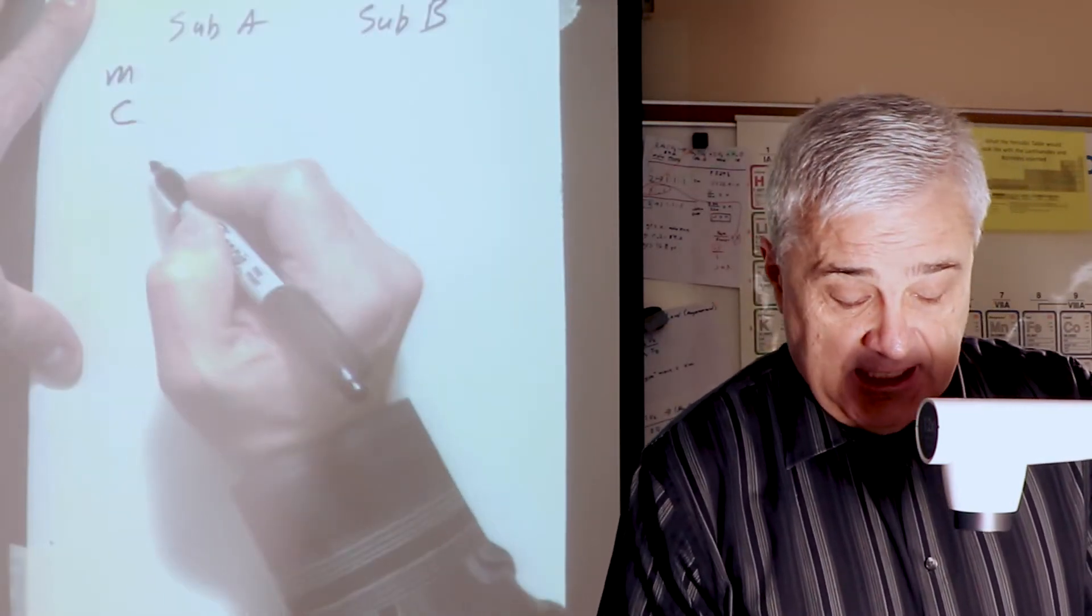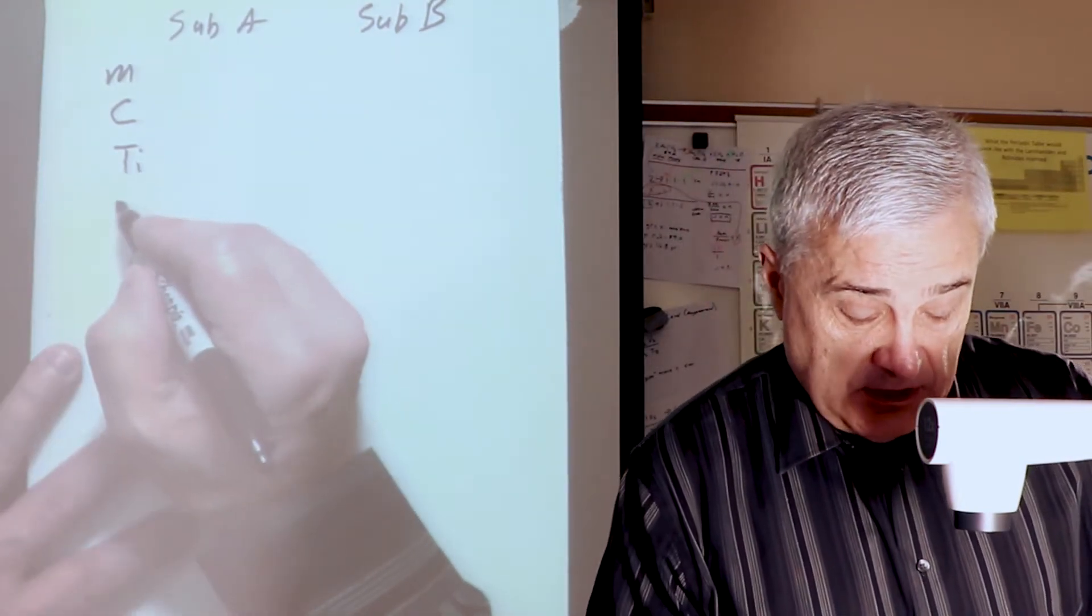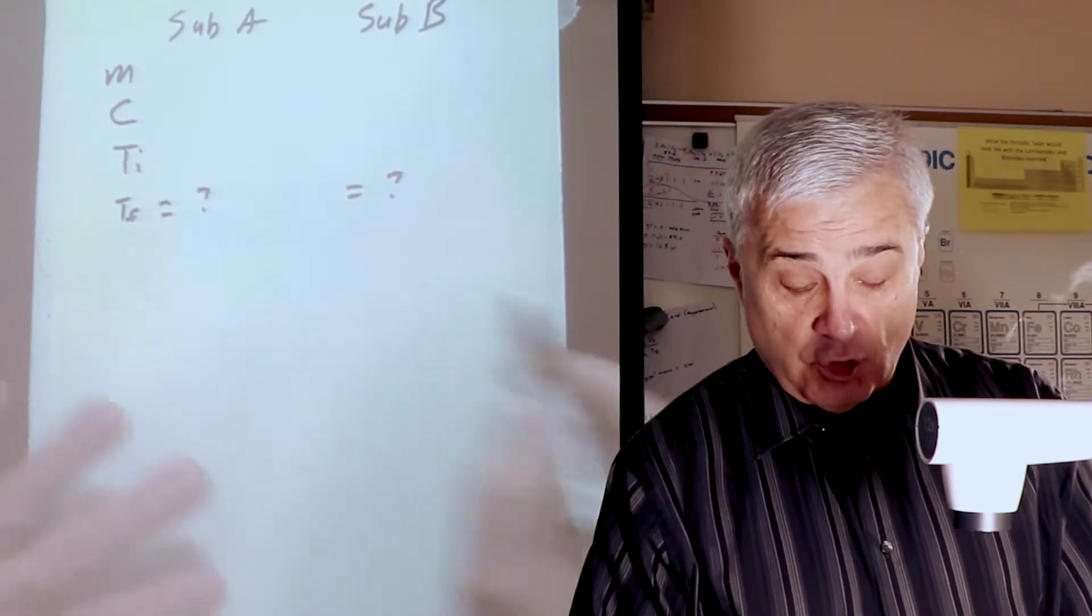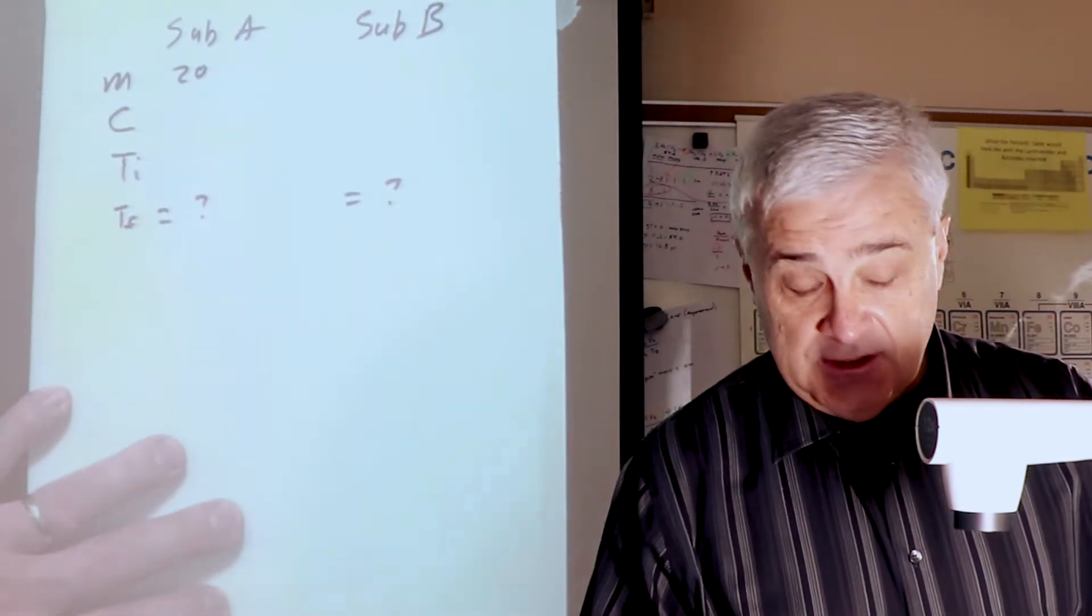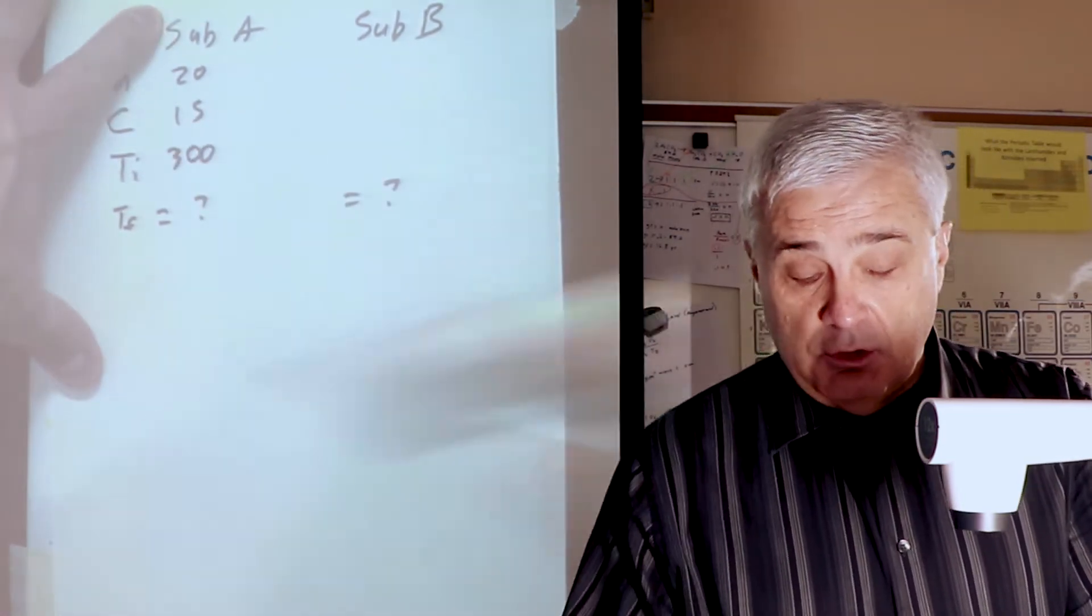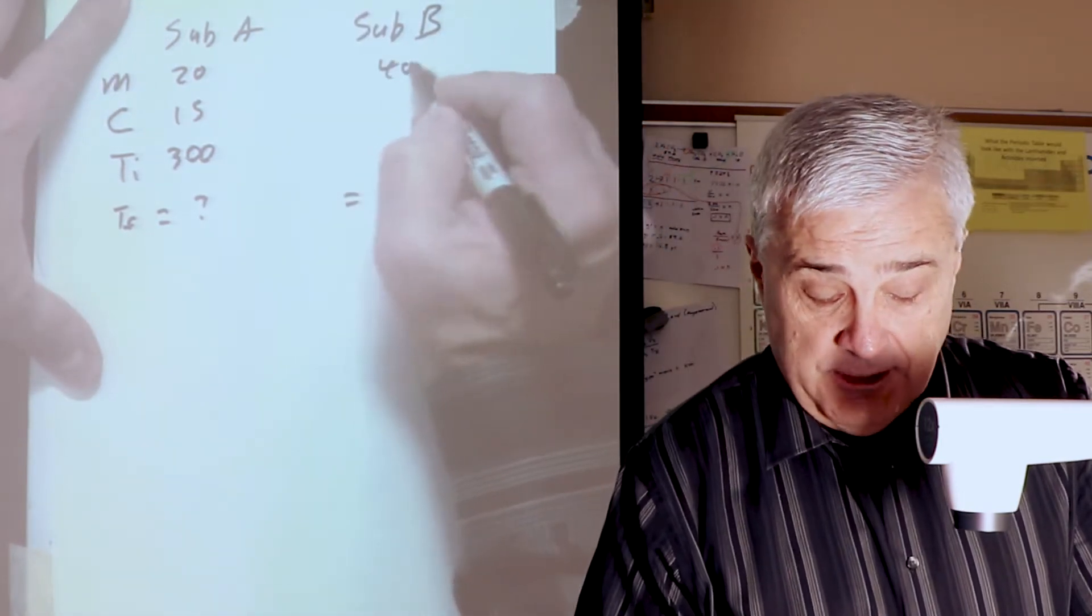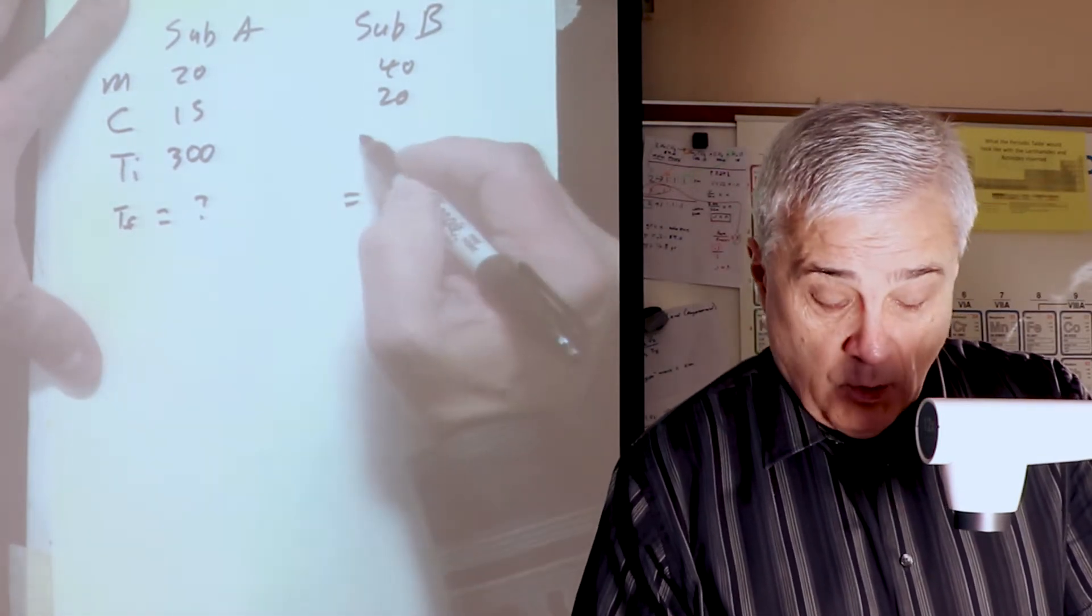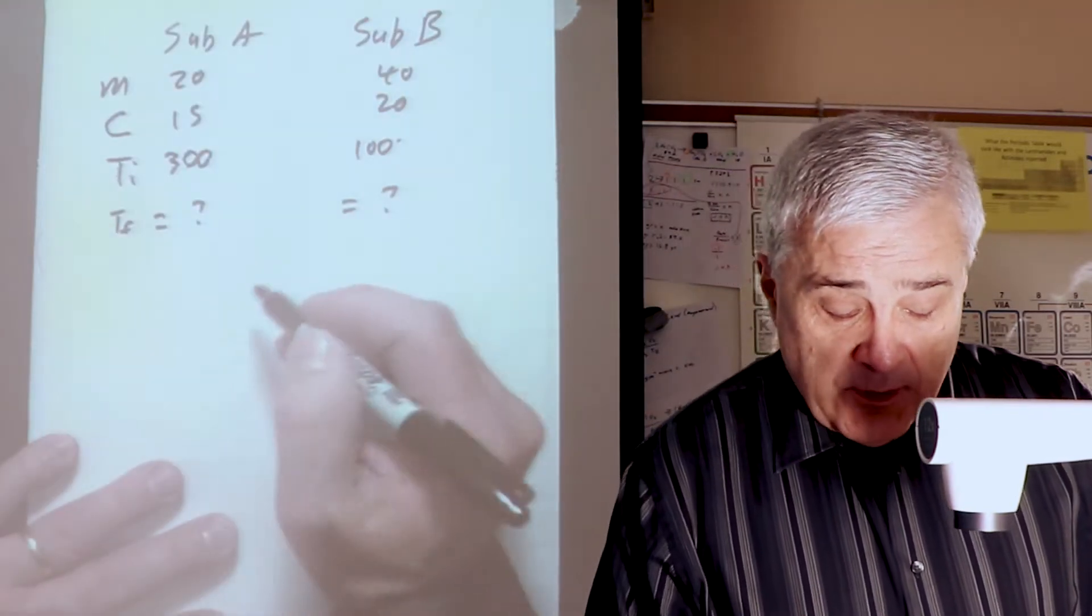Mass, specific heat, initial temperature, and we're supposed to find the final temperature. So T sub F is the thing that we're looking for. The mass of substance A, let's say is 20 with a specific heat of 15 and initial temperature 300. It's going to cool off. This will be the heat loss side. The mass is 40 with a specific heat of 20 and initial temperature 100.